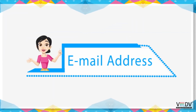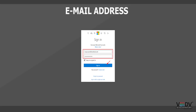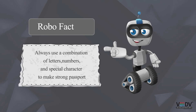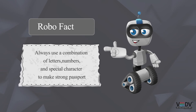Email address: If we have an account with an ISP, we can establish an email address. Every email address has a unique address; two people cannot get the same email address. An email address consists of three parts: the username, the at the rate symbol (@), and the email service provider address. Example: indiaschool@yahoo.com. Robo Fact: Always use a combination of letters, numbers, and special characters to make a strong password.